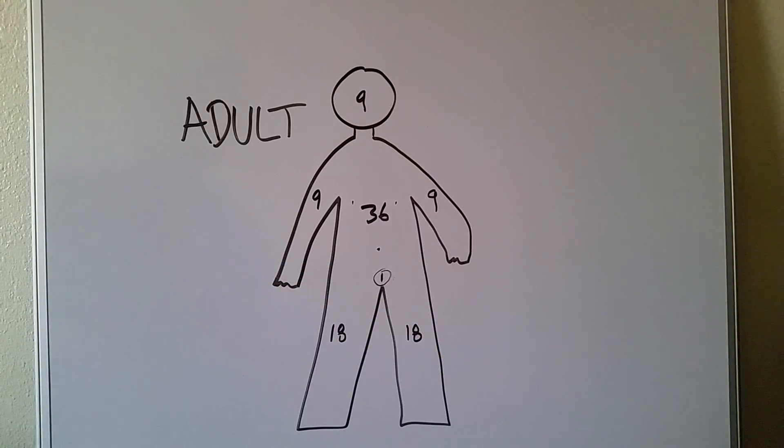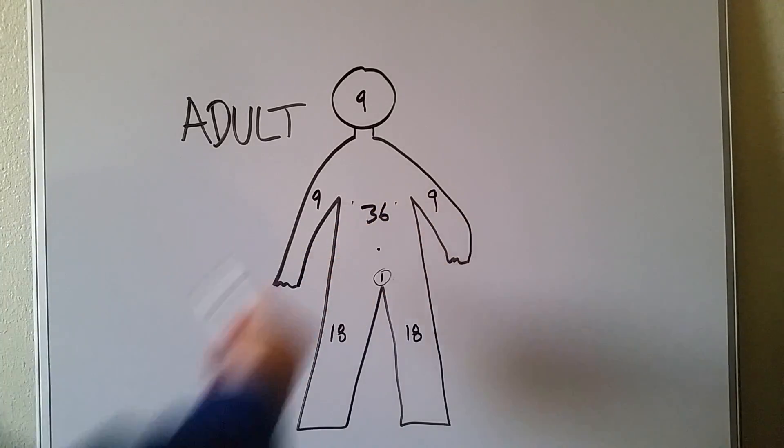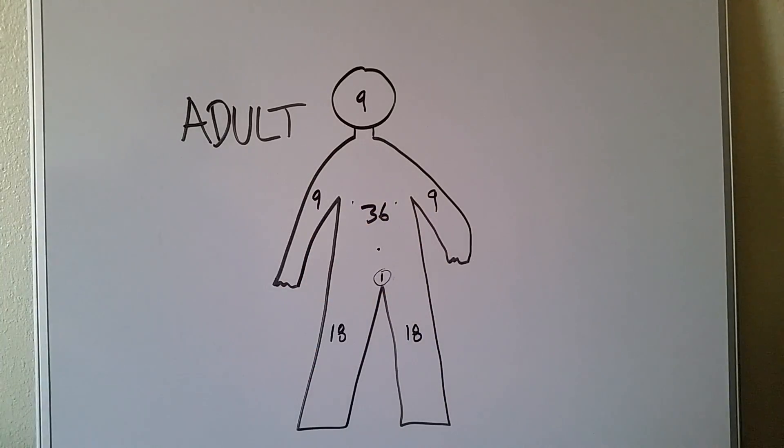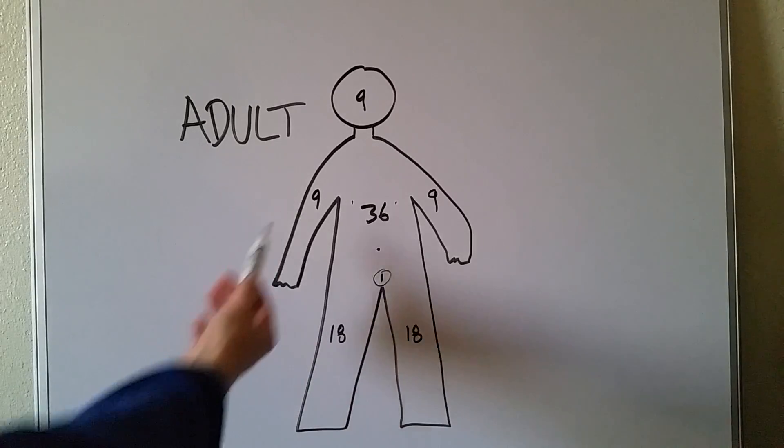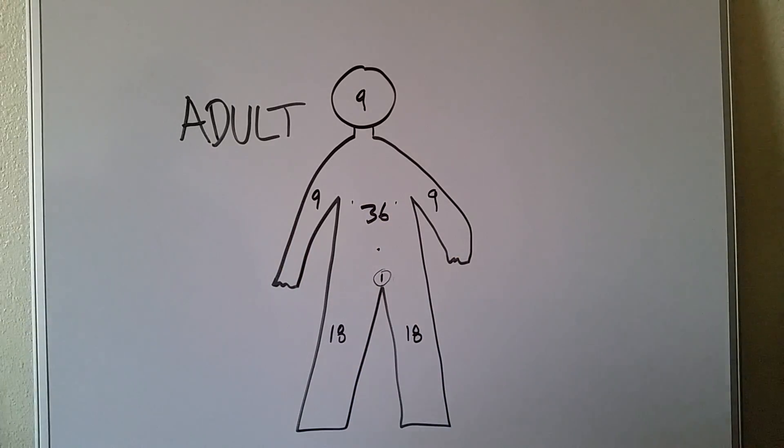Just divide this 36 in half. So like if your problem says, or if this patient only has burns on their back, well, they're not going to have full 36% burns because they only have burns on their back. So it's going to be 18, it's going to be half this. So if only the backside of the right arm is burned, we're not going to give them a full nine percent. We're given 4.5.